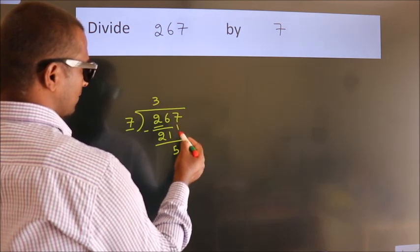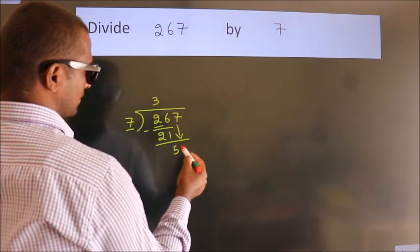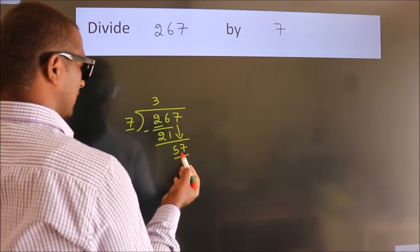After this, bring down the beside number. So, 7 down. So, 57.